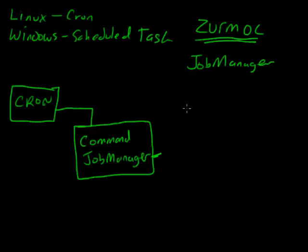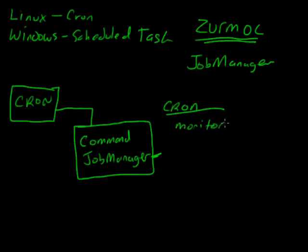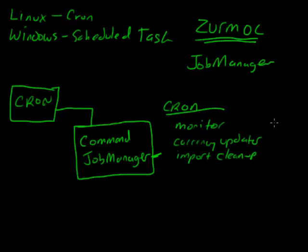So if we're talking about currency and the job monitor, you're actually going to have a cron tab with an actual entry for monitor, an entry for currency updater, and an entry for import cleanup. The cron tab then specifies what the frequency is for each of these different jobs. So for every single job you have, you'll need to enter a new cron entry, or on Windows a new scheduled task.